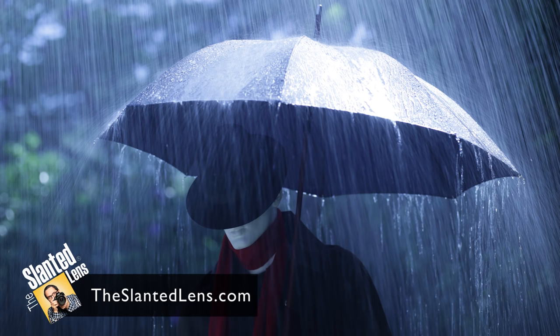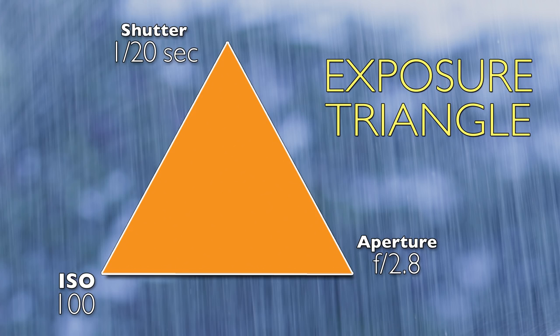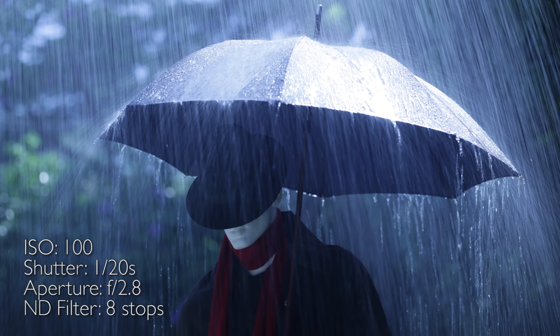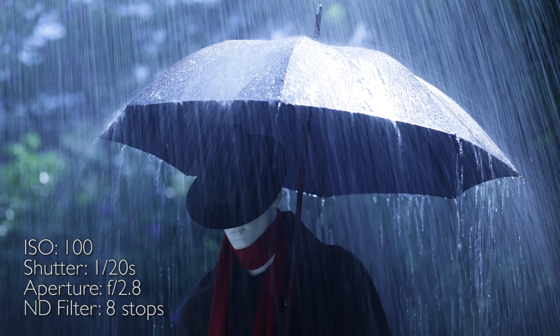I'm going to put my ISO at 100, go to f/2.8 at 1/20th of a second, and then using my ND filter, I'm going to turn it to eight stops of ND so I can really let that shutter be longer. That still image shows a lot of motion — the water is blurring into the shot, blurring on top of itself, and it just looks fabulous as a single shot.